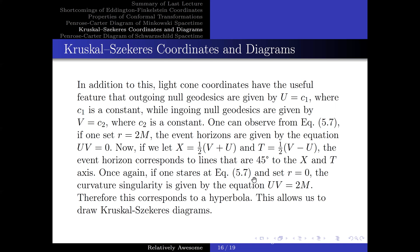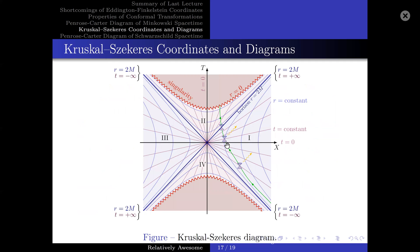This allows us to draw the Kruskal-Szekeres diagram. In this diagram, the horizontal axis is the capital X axis and the vertical axis is the capital T axis. We can see that the blue lines correspond to lines of constant r and they are hyperbolic. The gray lines correspond to lines of constant t and they are straight. Moreover, the curvature singularity represented by the zigzag line is a hyperbola with equation capital U times capital V equals 2m. The equation capital U times capital V equals 0 corresponds to the event horizons, and they divide spacetime into four regions. One downside of the Kruskal-Szekeres diagram is that it has infinite range.